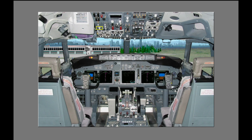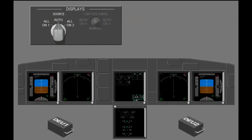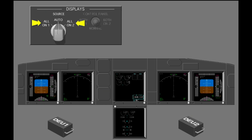The display source selector is on the forward overhead panel. You use the selector to select the DEU that supplies data to the pilot's DUs. Normally, the selector is in the auto position. With the selector in auto, each DEU controls the related displays. If a DEU fails, the remaining DEU automatically supplies data to all six DUs. If you select all on one or all on two, the related DEU supplies data to all displays.